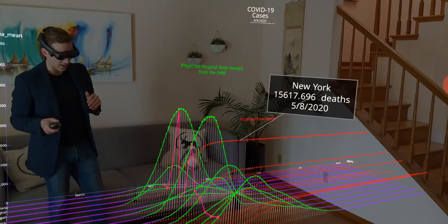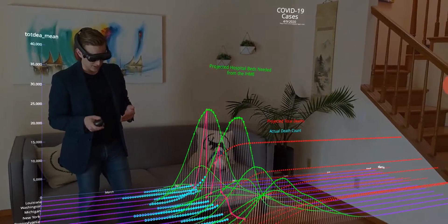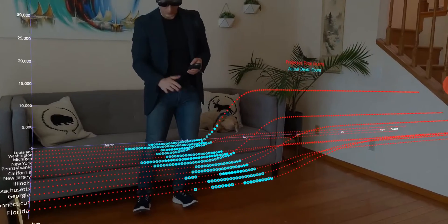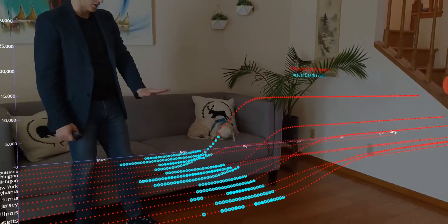And these blue dots here are representative of the actual numbers. And we can see that it's following those predictive models relatively closely, if not just a little shy of them, which is a good sign.